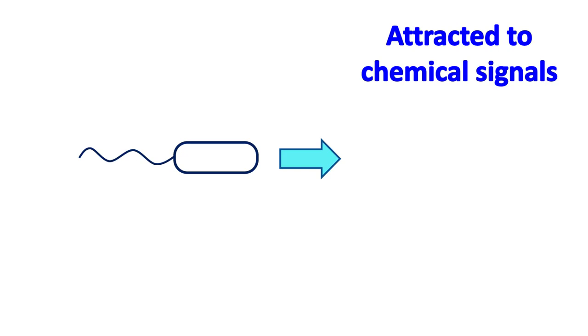In the absence of chemoattractant, there is a random movement. In the presence of chemoattractant such as amino acids and sugars, there is a directional movement.